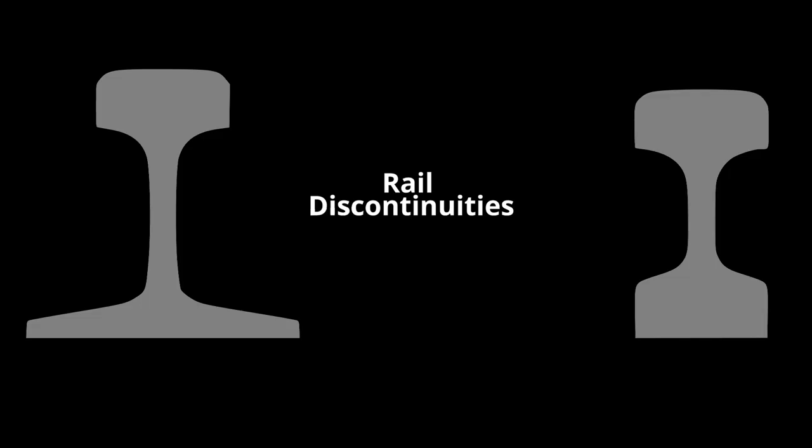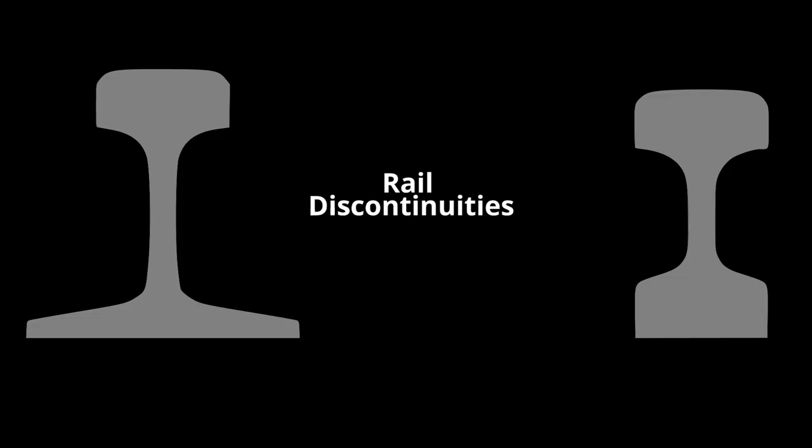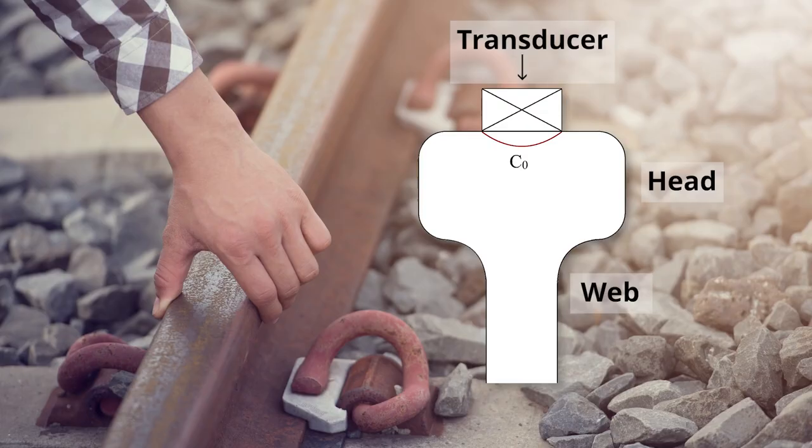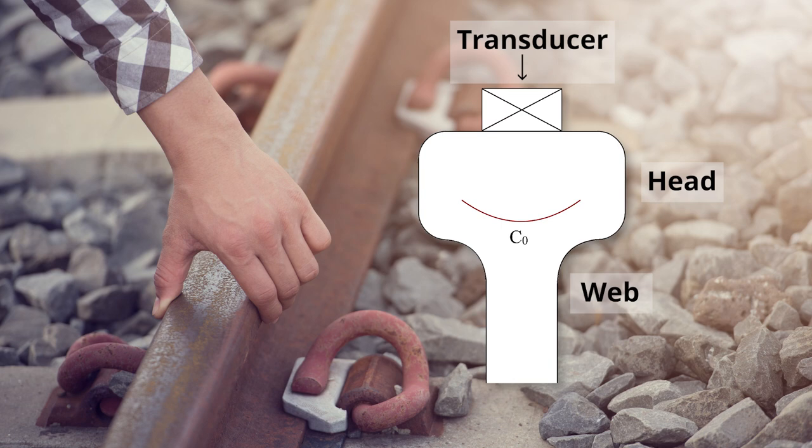Discontinuities typically occur in the head and web of the rail and less commonly in the base. The geometry of the head and web significantly impact the echo patterns seen by a straight beam transducer located on the railhead.